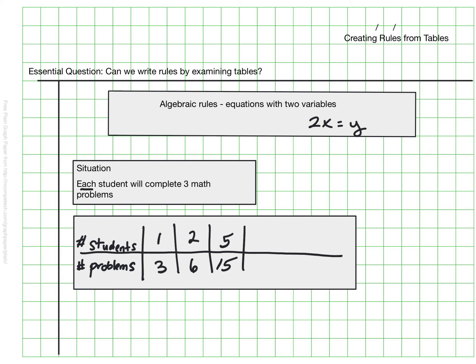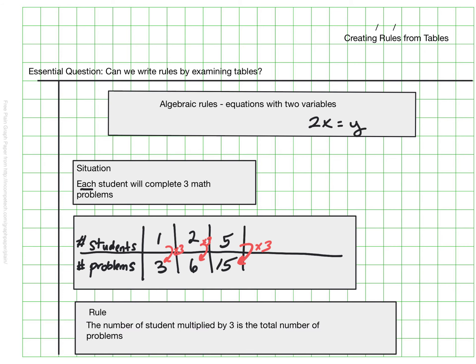And what it seems to be kind of a shortcut for me to think about is that I'm just multiplying the number of students times three. The number of students times three, the number of students times three. And that can create my rule. So let's say we have the number of students. Let's use that as S. And we'd say the number of students times three is the total number of problems.